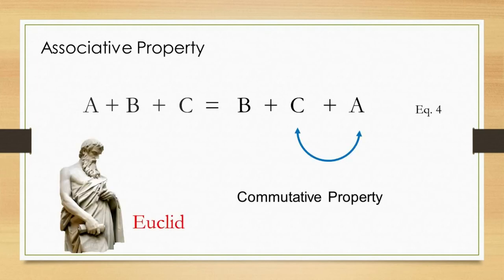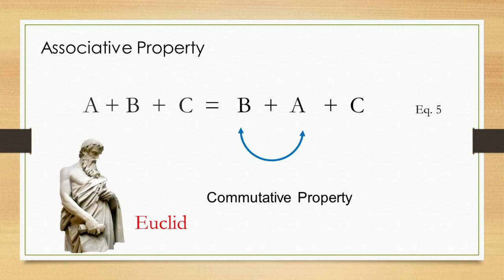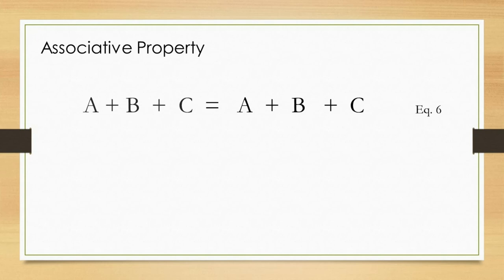Let us focus on the terms C and A of the right arm of the equation. Using the commutative property of addition, as previously mentioned, the positions of terms C and A are interchangeable. This interchanging gives us equation 5, as shown in this slide. Similarly, the same interchanging can be applied to terms B and A, giving us equation 6, as shown in this slide.